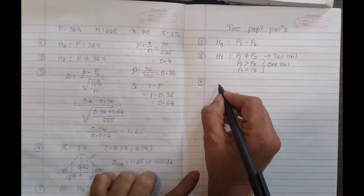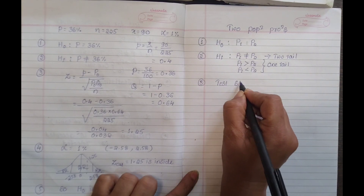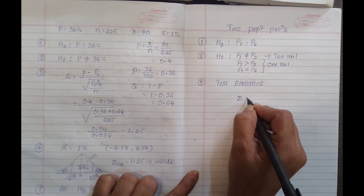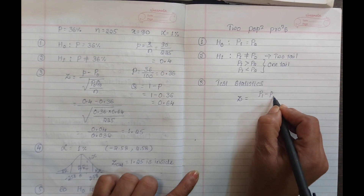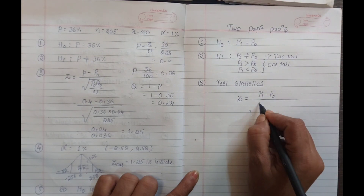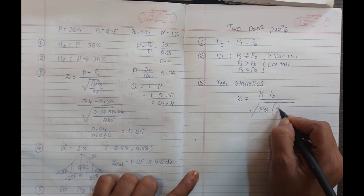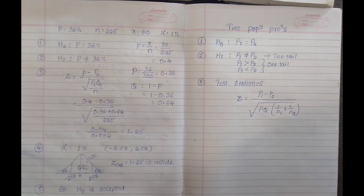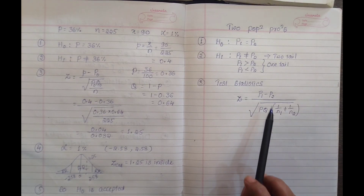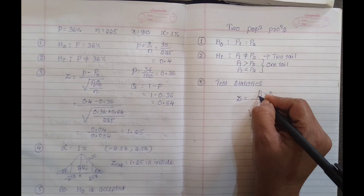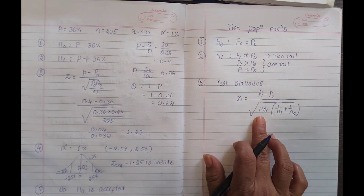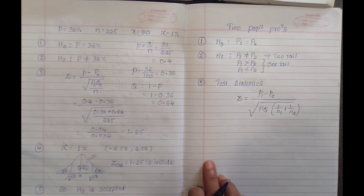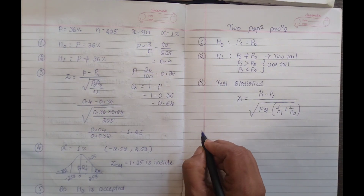The third step is the test statistic. The test statistic is: Z equals P1-hat minus P2-hat divided by the square root of PQ into (1/N1 plus 1/N2). Here, small P1 and P2 are the sample proportions, capital P is the population proportion, Q equals 1 minus P, and N1 and N2 are the sample sizes.